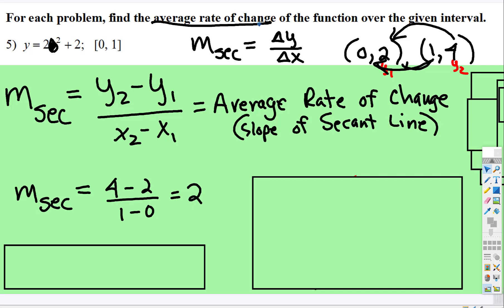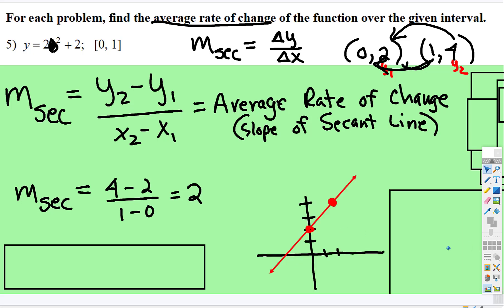So the average rate of change of this function between, so if we had this function right here, and then we plotted those points, the average rate of change between these two points is 2. And look, you can almost see it, up 2 over 1.